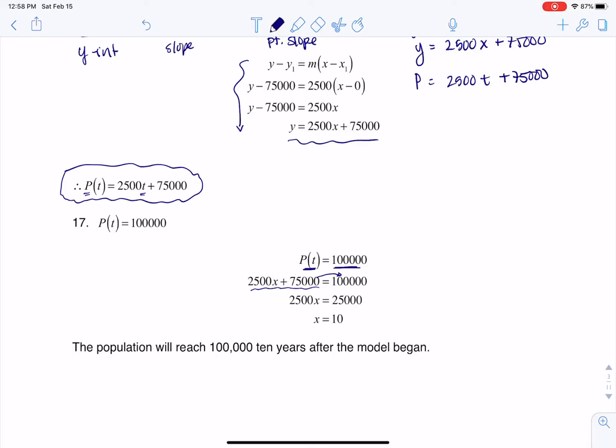Here is my function for the population that we found in 13. So I'm going to subtract 75,000 to this side of the equation, and that leaves me with 2,500x equal to 25,000. So when I solve that, I get x equals 10. So 10 years after this model began, we don't know when that is, but 10 years after, the population reaches 100,000. All right, thanks so much. Bye.